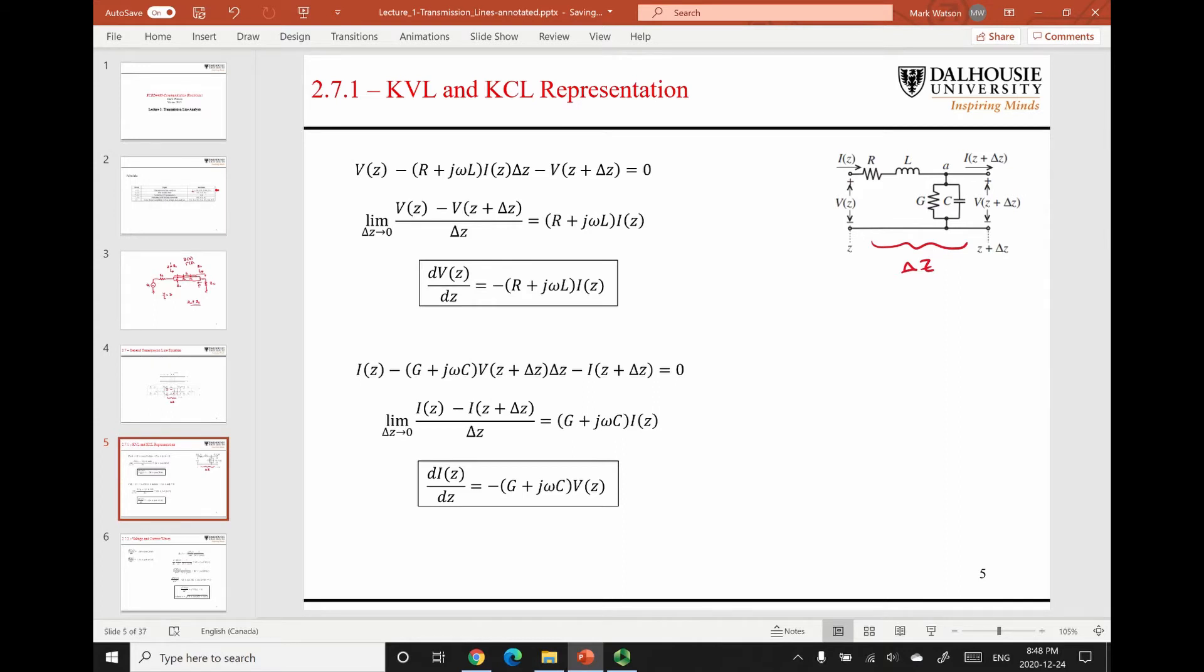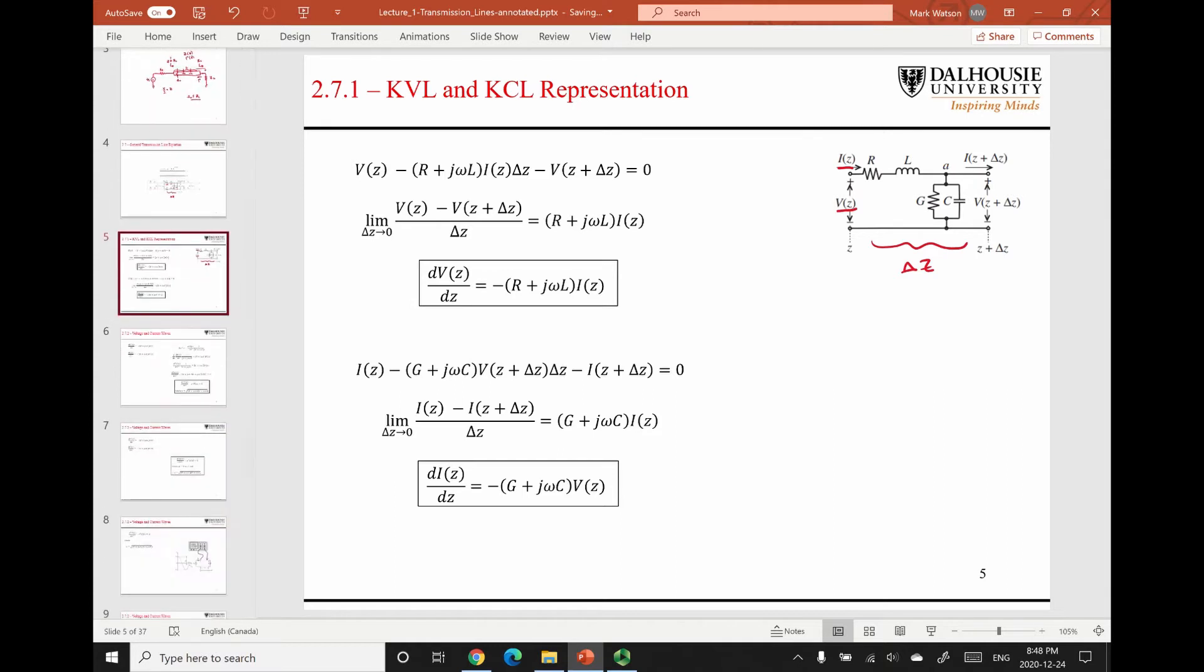So here we have the voltage and current written in phasor form. We've done away with the time variance here for the moment, but we'll see that again here in a sec. So applying Kirchhoff's voltage law around this loop, we arrive at this equation. Notice that there is a delta z here.